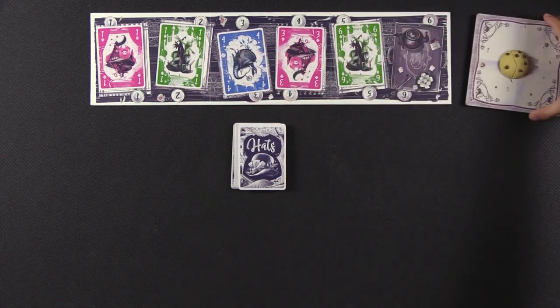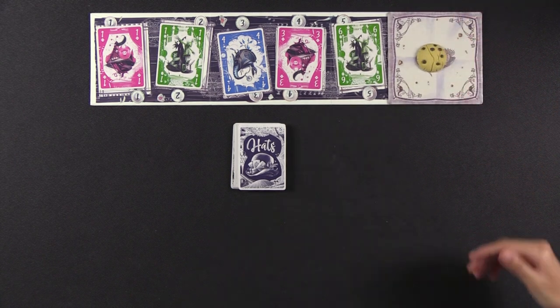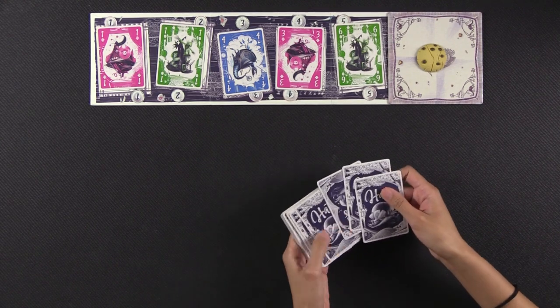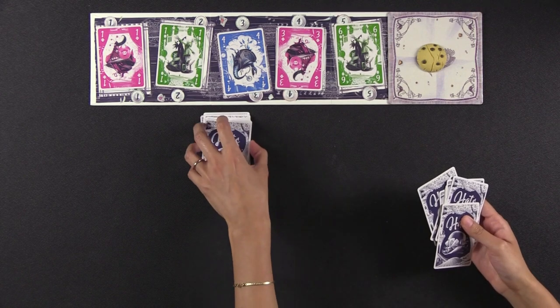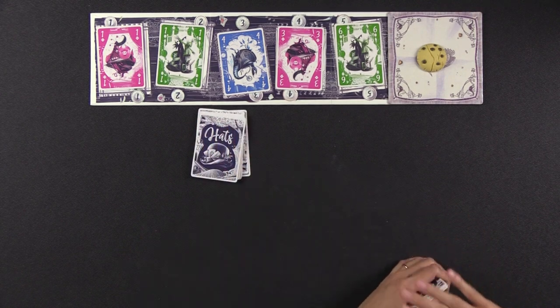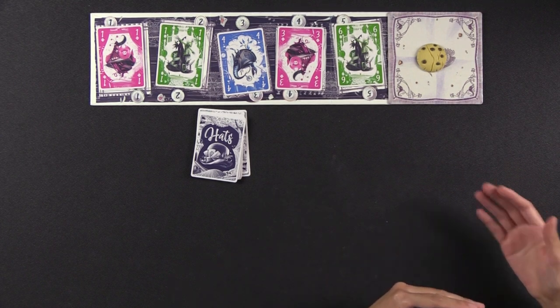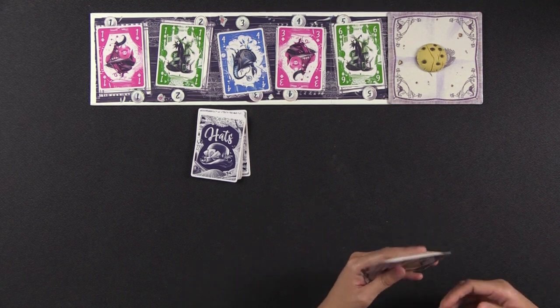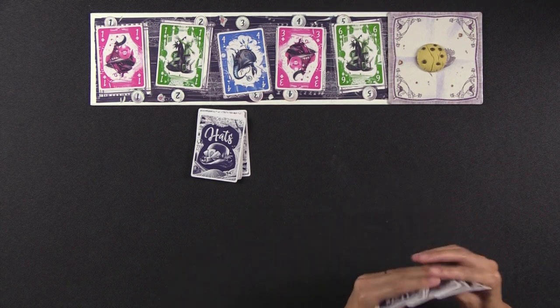In higher player counts, you actually use the sixth spot, but because it's a two-player game, we're going to cover that up with our napkin that has a cookie. And so at the start of the game, each player is going to have a hand of nine cards. So let's just say this is my hand. And so over the course of the game, we are trying to grow a collection of hats. And at the very end of the game, we want our hat collection to be worth more points than our opponent.